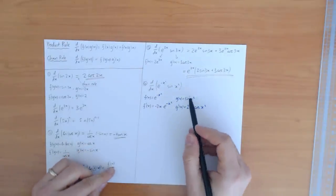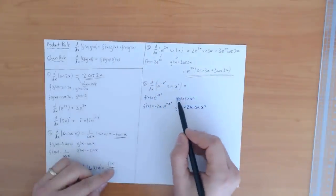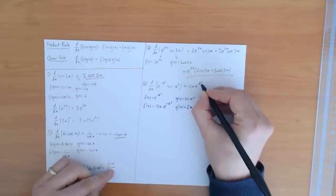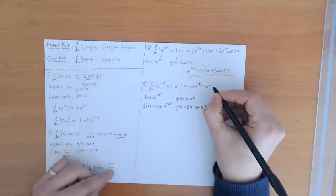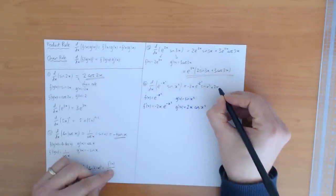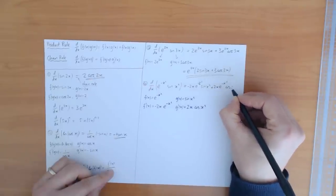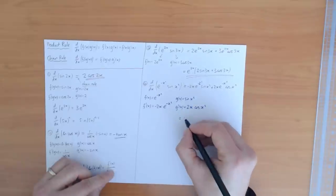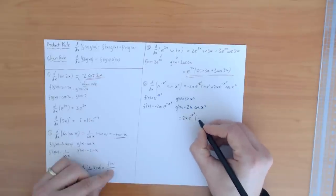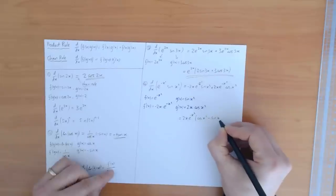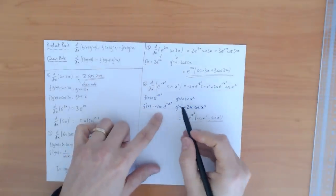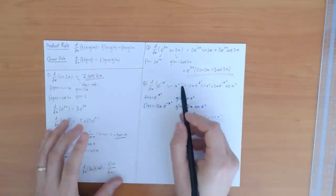Putting these into the product rule: the answer is f prime times g plus f times g prime. That's minus 2x e to the minus x squared times sine x squared, plus 2x e to the minus x squared times cos x squared. Factorizing, I can write this as 2x e to the minus x squared times (cos x squared minus sine x squared). This is an example where I've used the chain rule to find the derivatives of f and g, then the product rule for the total derivative.